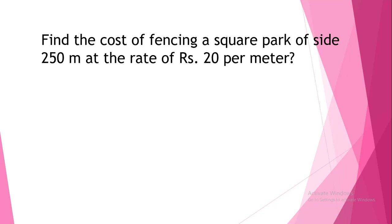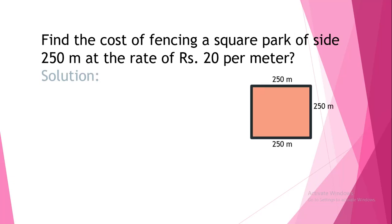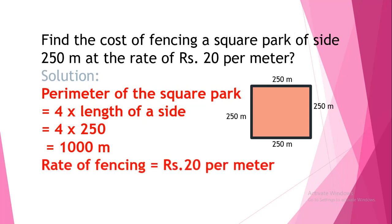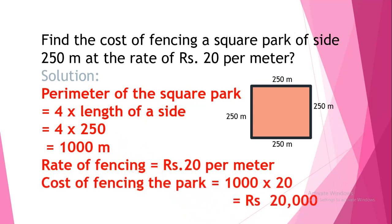Next question: find the cost of fencing a square park of side 250 meters at the rate of 20 rupees per meter. To find the cost of fencing, first we find the perimeter of the square park, since fencing is done all around the park. Perimeter = 4 × side = 4 × 250 = 1000 meters. Given rate of fencing is 20 rupees per meter. So cost of fencing = 1000 × 20 = 20,000 rupees.